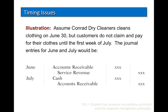Here is another illustration. Assume Conrad Dry Cleaners cleans clothing on June 30 but customers do not claim and pay for their clothes until the first week of July. The journal entries for June and July would be to debit accounts receivable and credit service revenue in June, and then in July debit cash and credit accounts receivable when we actually receive payment.